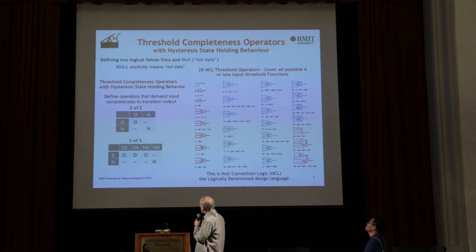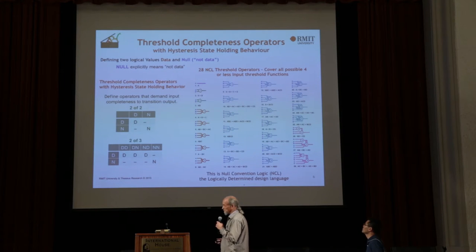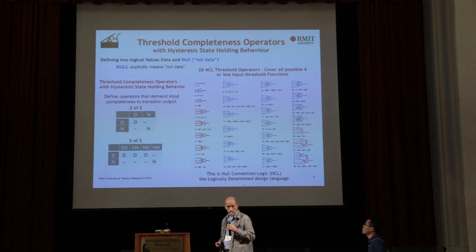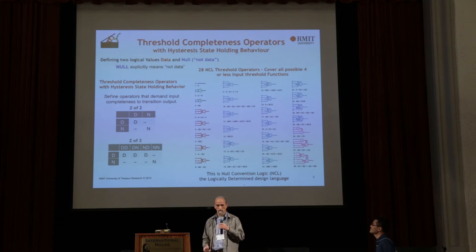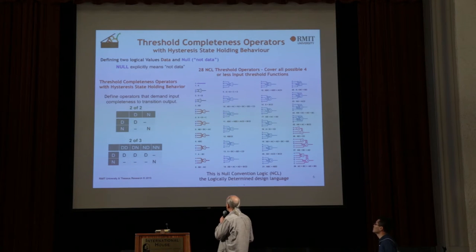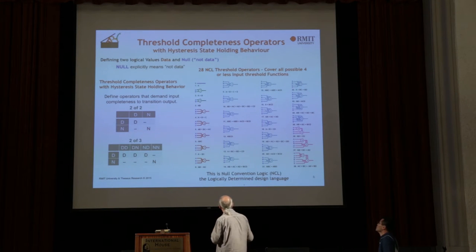Here's a two-of-two threshold operator. Only when both inputs are data does the output transition to data. Only when both inputs are null does the output transition to null — otherwise it maintains its state. This is a two-of-three operator: only when two inputs are data does it transition its output. We can define a set of these threshold operators covering all possible threshold functions of four inputs or less. This is our library — the language of logically determined design. This is null convention logic.